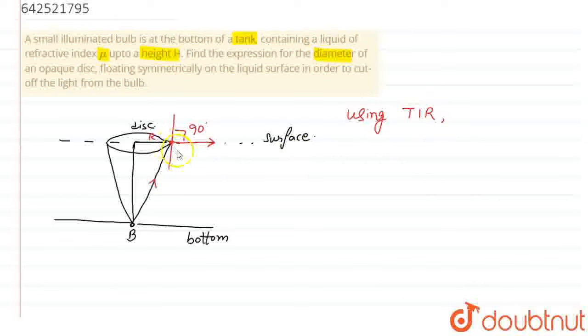So, using TIR at this point, let us say P, what do we get? Refractive index will be 1 by sin C. C is the critical angle. Rearranging this we get sin C as 1 by mu. And obviously this angle will also be C because these two lines are parallel and this is a transversal. VP is a transversal. By alternate interior angle, this also will be angle C.